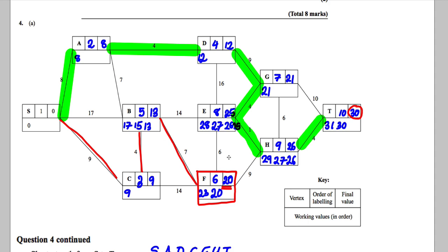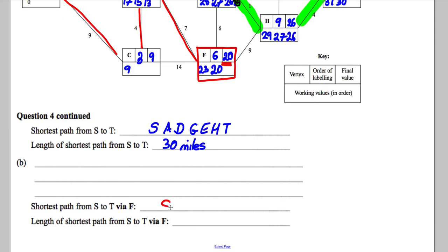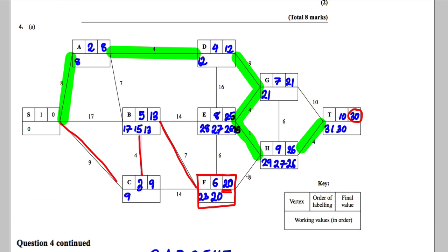So there, S, C, B and F would be the quickest there. So S, C, B to F.